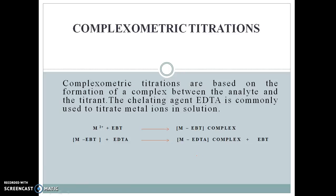Second one is complexometric titration. This titration is completely based on the formation of a complex between the analyte and titrant. Generally, the complexing agent used in complexometric titration is EDTA — ethylenediamine tetraacetic acid — which is used as a chelating agent or complexing agent. If we have a solution of metal ion whose concentration is unknown to us, then that metal ion solution is directly titrated with the EDTA solution whose concentration is known to us.